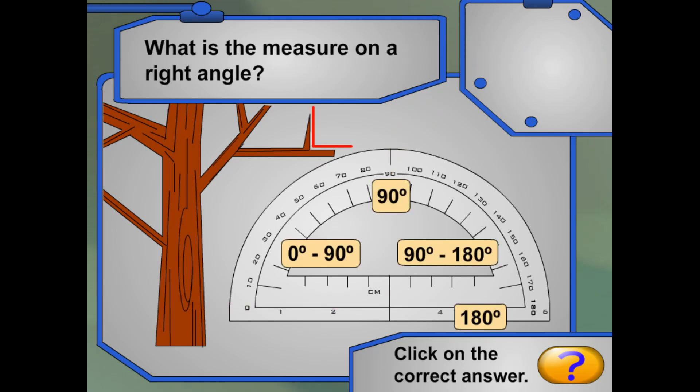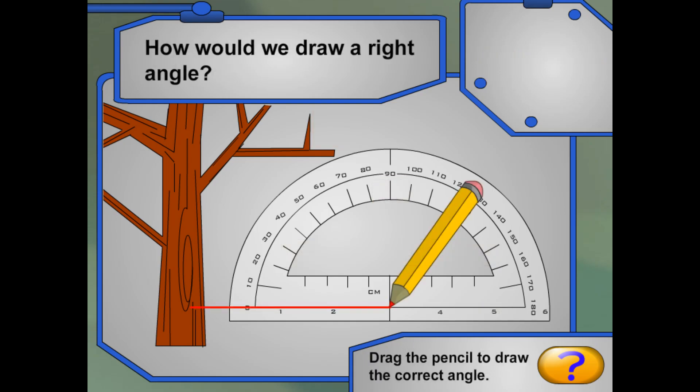Let's look at another branch. I think this one may be a right angle. What is the measure for a right angle? Right! A right angle measures 90 degrees. Hey! Could you draw a right angle? Right! A right angle measures 90 degrees.